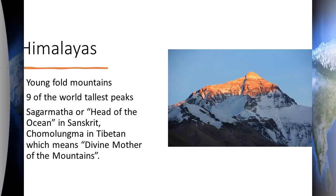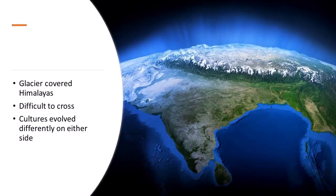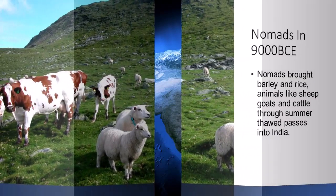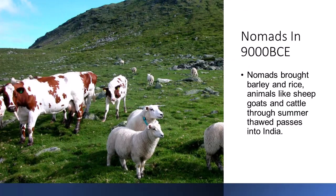Glacier-covered mountains of the Himalayas and Tibet were so difficult to cross that historically there has been limited direct exchange between India and China, even though both major cultures evolved on either side of the same mountain range. From about 9000 BCE, that is 11,000 years ago, some nomads brought plants like barley and rice, and animals like sheep, goats and cattle through summer mountain passes into India.